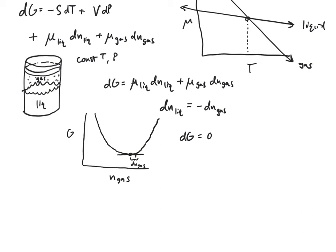So therefore, that is just like saying zero equals μ_liquid dn_liquid plus μ_gas dn_gas. But of course, dn_liquid is equal to negative dn_gas. So that's zero equals negative μ_liquid dn_gas plus μ_gas dn_gas.